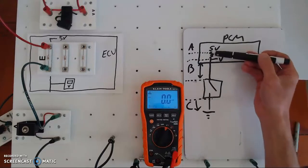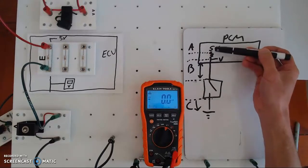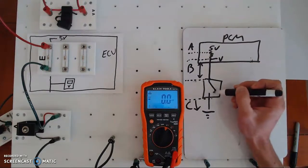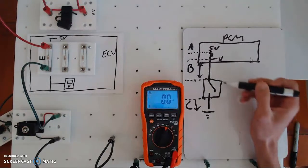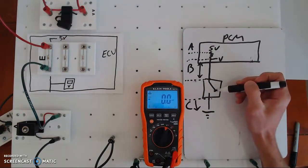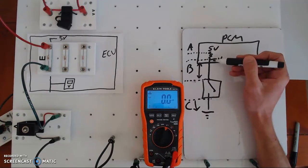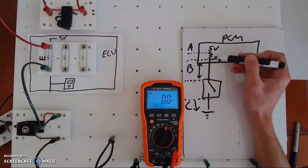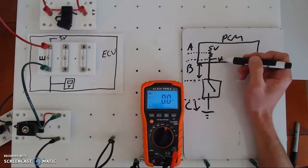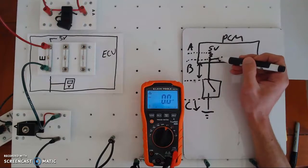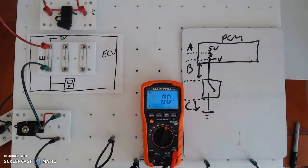Section B is the section that changes based on the position of the switch. Remember Ohm's law — voltage goes all the way up to the open regardless of resistance. So I have a fixed resistor in here, but this 5 volts goes all the way down to the switch and right to the tip of that contact. When I close the switch, this whole section up to the resistor goes to 0.1 or less because Ohm's law says after the last load voltage is near zero. The computer has a voltmeter spliced in monitoring section B.